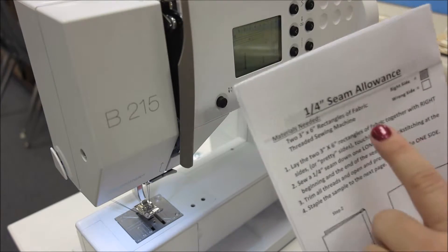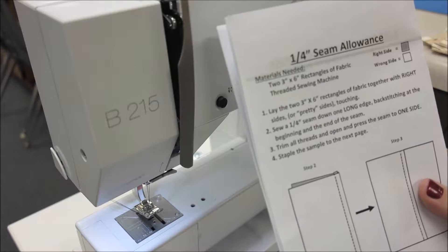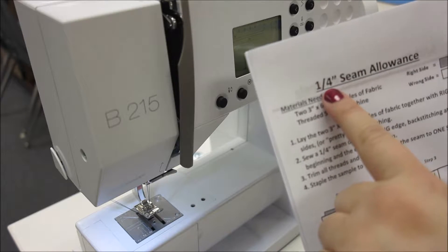The next sample in our book is the one-fourth inch seam allowance. This is going to be very similar to our first one, except instead of five-eighths, we're going to do one-fourth.